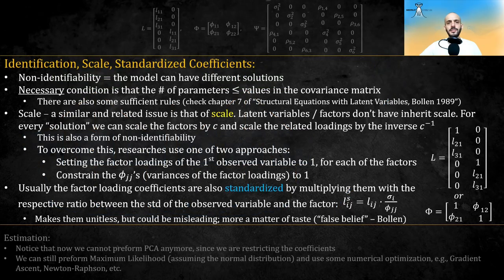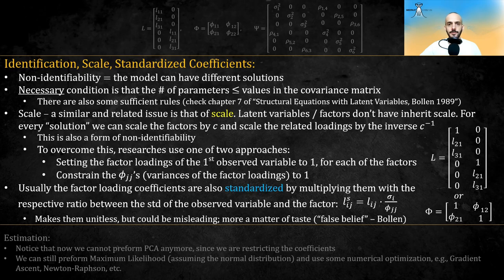There are some important issues to take note of in confirmatory factor analysis. One issue regards identifiability. We want our analysis to give us one solution, not many different ones. Since we are only working with the sample covariance, one fairly obvious necessary condition is that the number of free parameters in the model needs to be less than or equal to the number of values in the covariance matrix. And I should note unique values since the covariance matrix is symmetric. There are also other rules. I refer you to chapter 7 of the book Structural Equations with Latent Variables by Bollen.